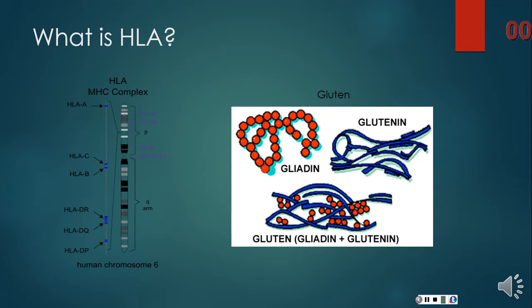HLA are complexes that help the immune system by distinguishing proteins made by the body and foreign invaders, like viruses and bacteria. Some HLA genes have hundreds of identified versions. These are called alleles, each with a given number.